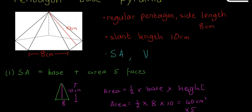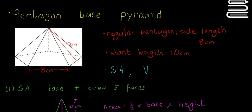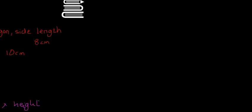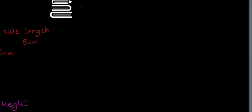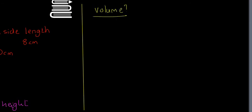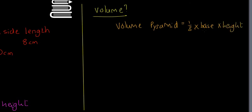Now we're going to look at finding the volume of this pyramid. The volume of any pyramid is one third times the base area times the height — that's something you need to learn. The base area we already know from the last part of the question: it's 110.2 centimetres squared. Now we need to find the vertical height of the pyramid — how high it is above the ground.